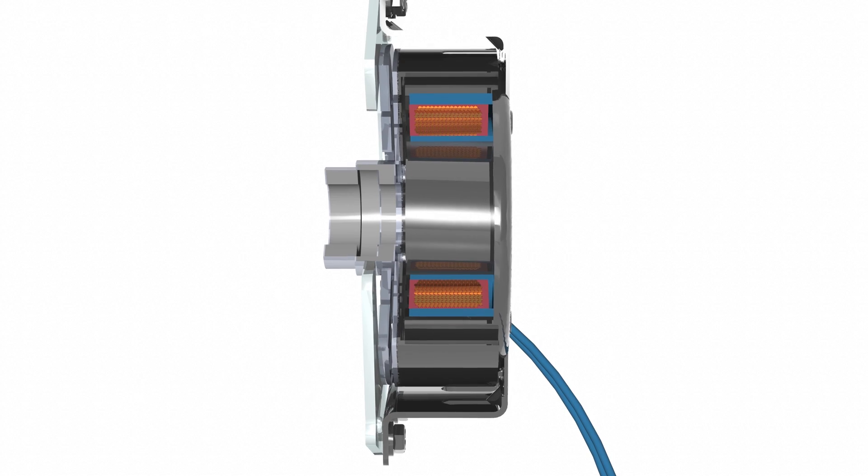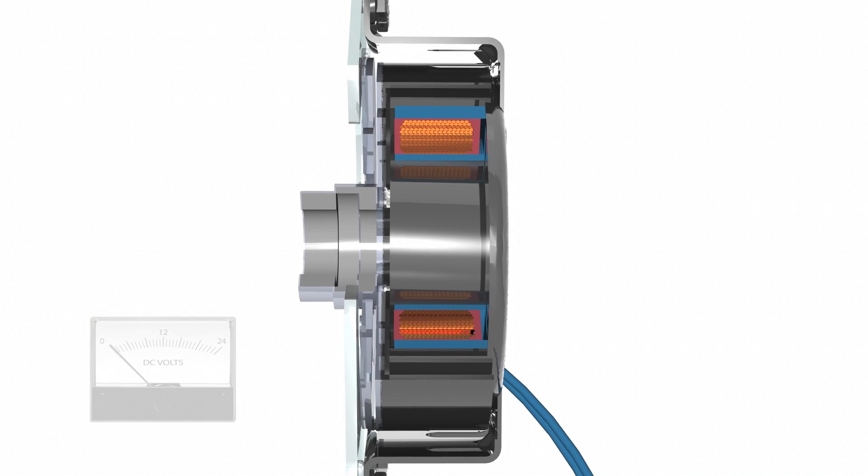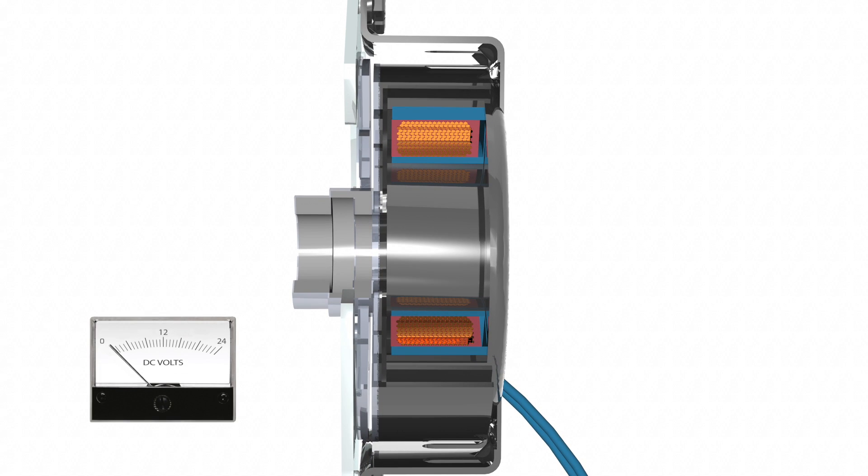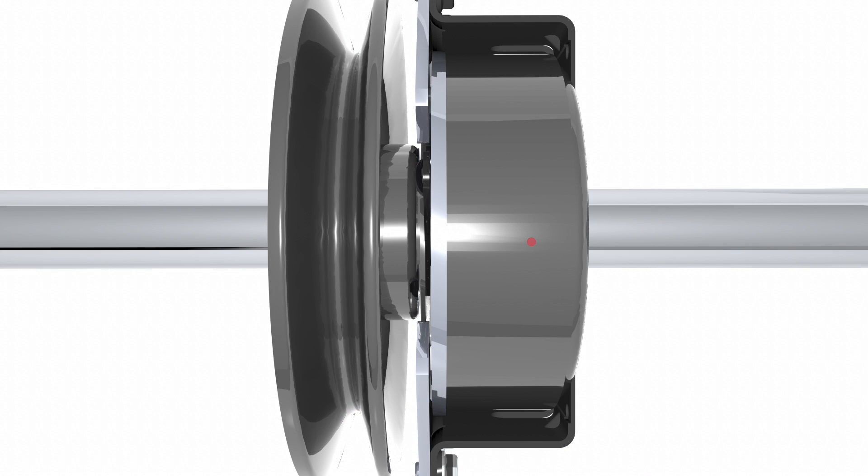When the current or voltage is removed from the clutch, the magnetic field degrades quickly and springs pull the armature away from the rotor and against the brake plate, causing a mechanical drag on the armature and pulley, which helps to slow down whatever the pulley is driving.